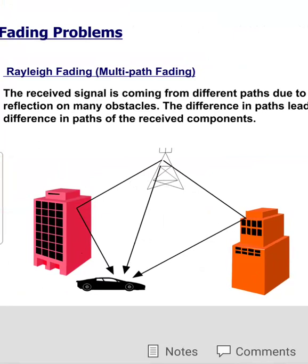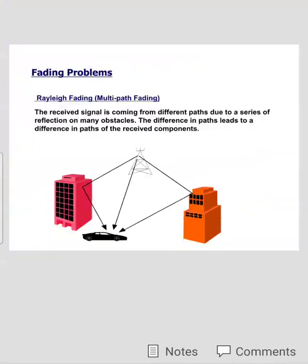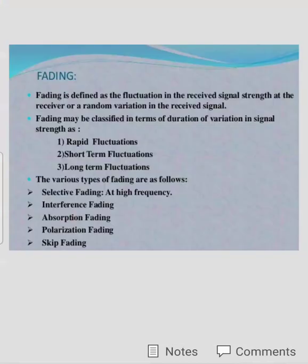This is regarding fading in wireless communication. We can conclude that fading is defined as a fluctuation in received signal strength at the receiver, or a random variation in the received signal.